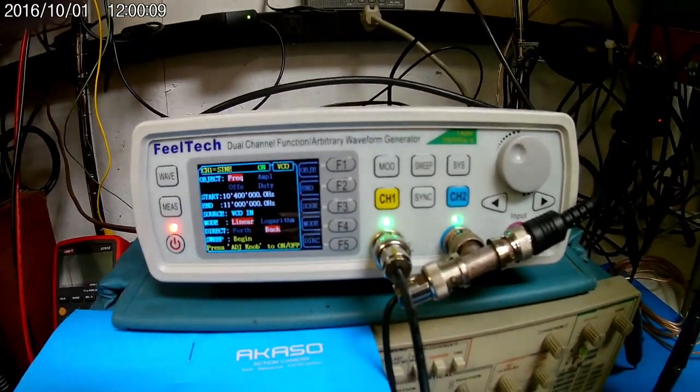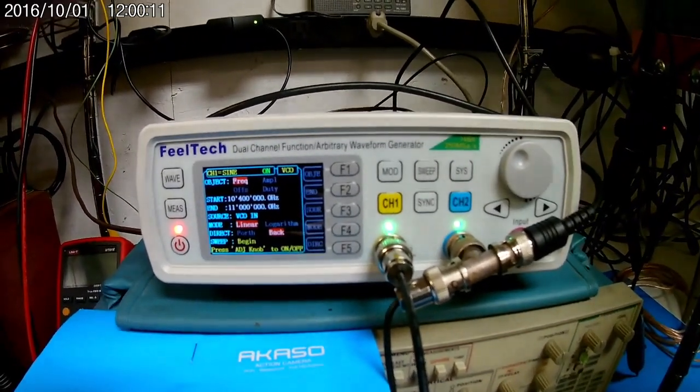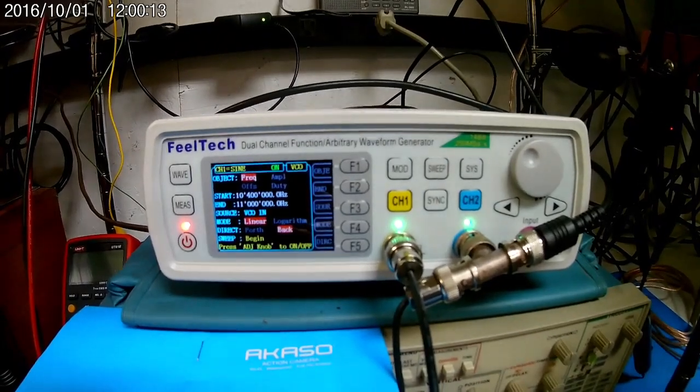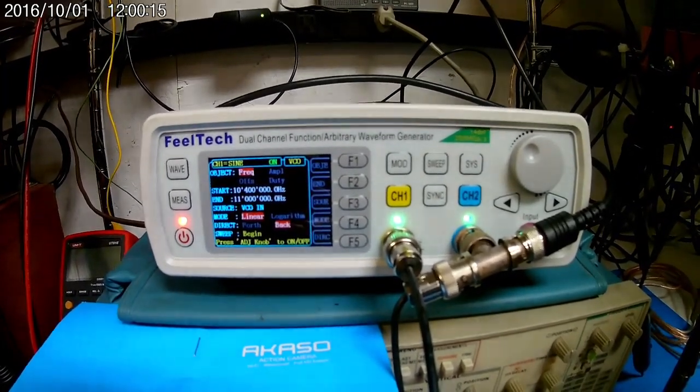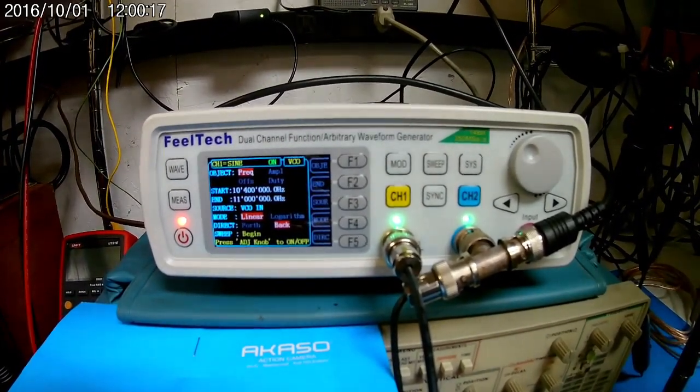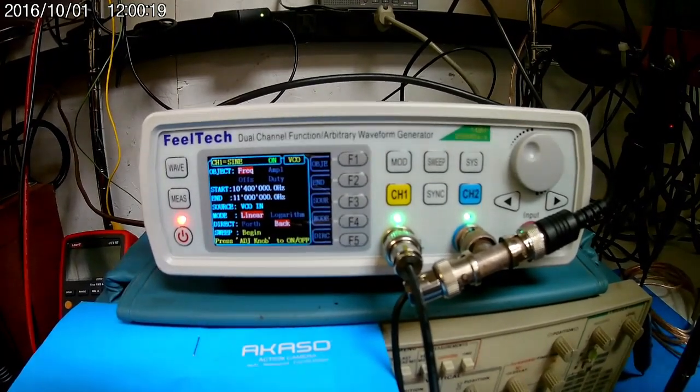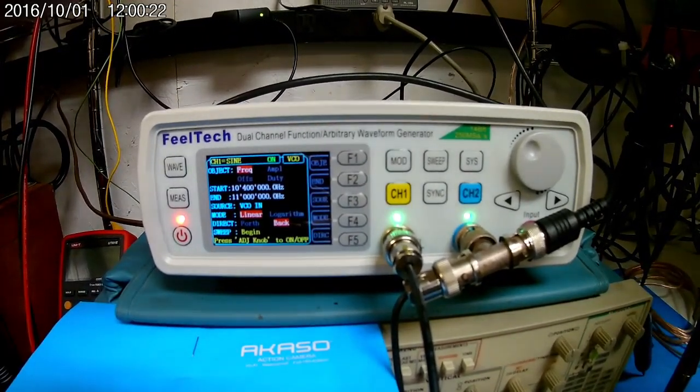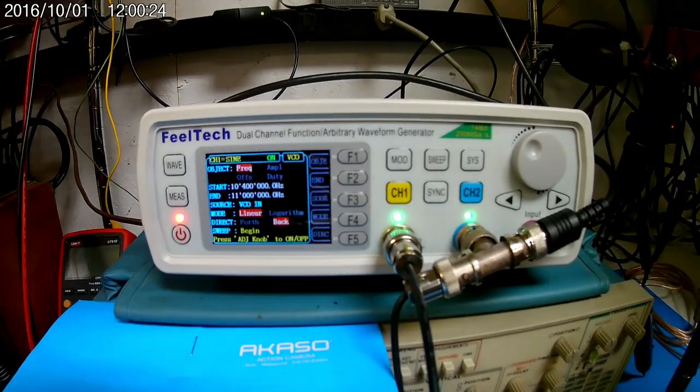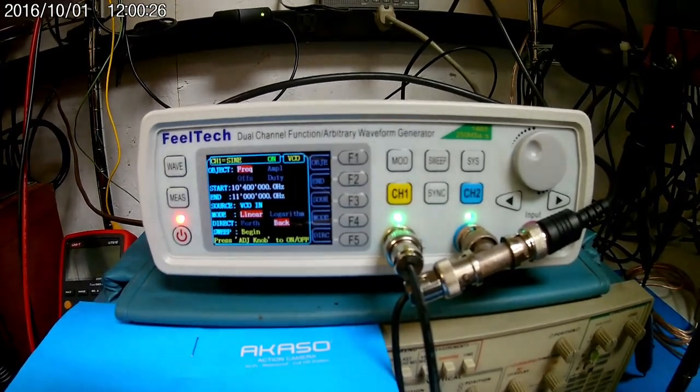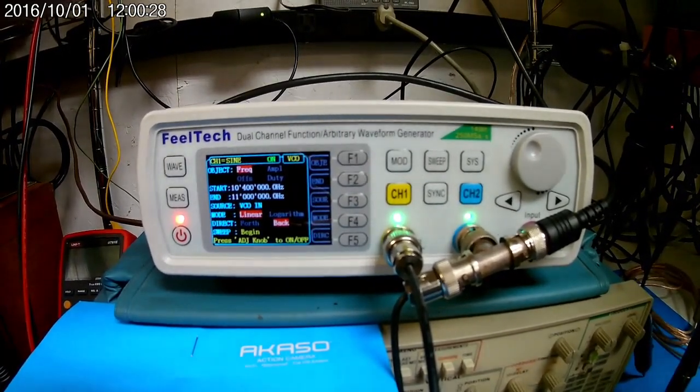Hi folks, I wanted to continue the last video that I did by talking about the Filtek FY6600. This is a sweep generator or a function generator that will cost you probably around $80 to $100.